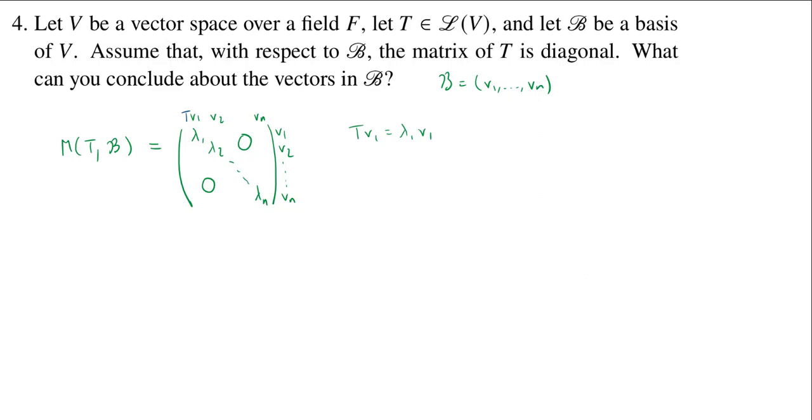And this right away should tell you, wait, there's something interesting here. V1 is an eigenvector, right? Of course, non-zero because it's coming from a basis for T corresponding to the eigenvalue lambda 1.